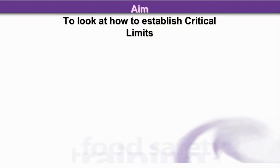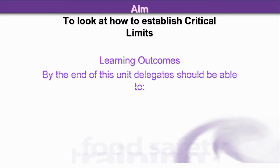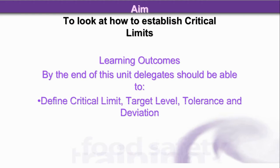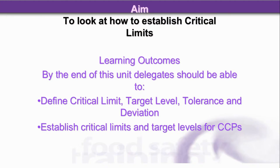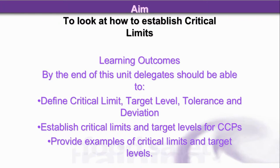The aim of this unit is to look at how to establish critical limits. The learning outcomes: by the end of this unit, delegates will be able to define critical limit, target level, tolerance and deviation. We'll be establishing critical limits and target levels for CCPs and providing examples of critical limits and target levels.